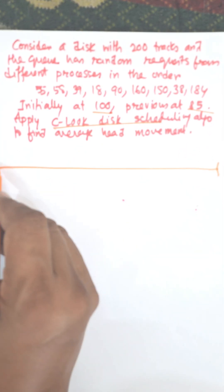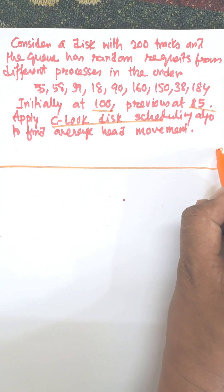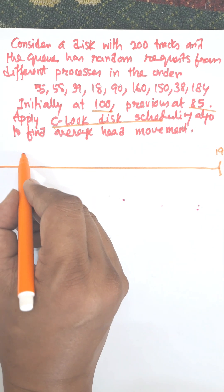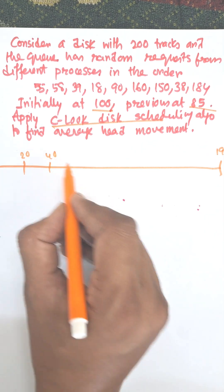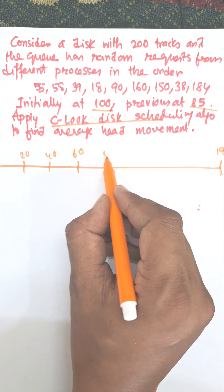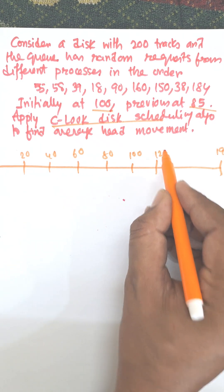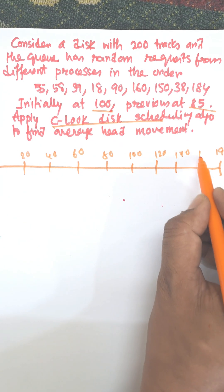Now we need to draw the total number of tracks, that is 0 to 199. Divide the track as 20, 40, 60, 80, 100, 120, 140, 160.